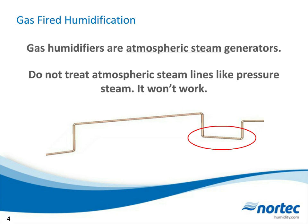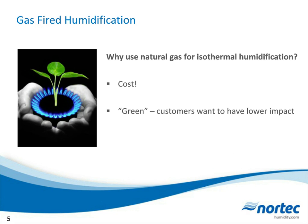Why use natural gas for isothermal humidification over other technologies? When I say isothermal, I'm talking about boiling technologies — using electricity, gas, or another heat source to boil water and put steam into a duct. The number one reason is lower operational cost. Depending on where you are in North America, your natural gas cost may be 30% to 60% less to boil water compared to electricity. Another reason is it's more green — customers want a lower environmental impact, and depending on your location, a natural gas humidifier may actually create fewer carbon emissions than electric steam.